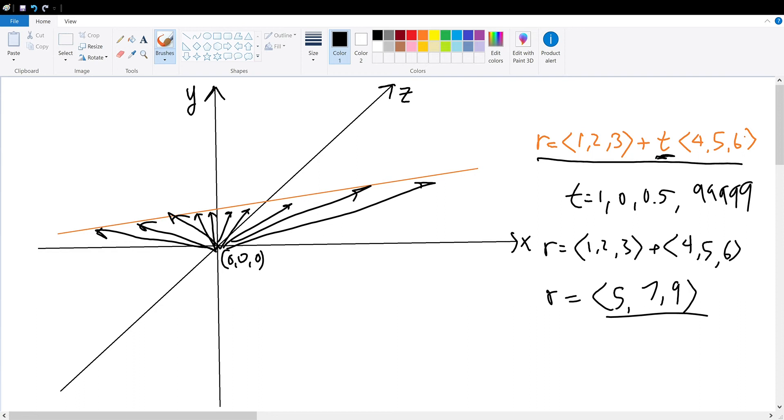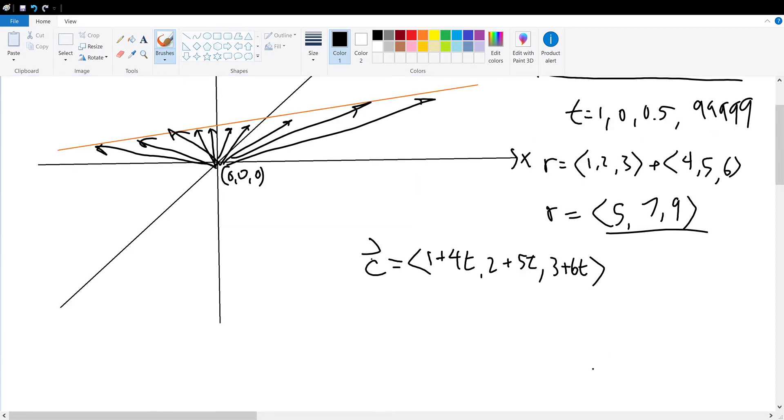So based on this definition, we can know that the vector that resembles the closest point to our origin, 0, 0, 0, must satisfy this function. Therefore, let us call this vector c vector. c vector must be equal to, for some value of t, so its x component will be 1 plus 4t, comma 2 plus 5t, comma 3 plus 6t. So, this vector will be our closest vector, c vector. With some value of t, you'll find the c vector.